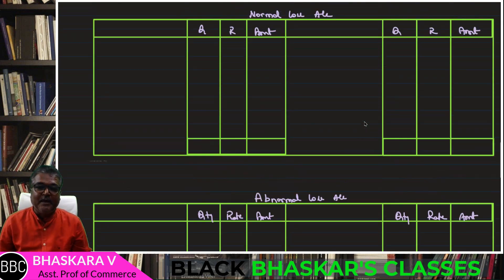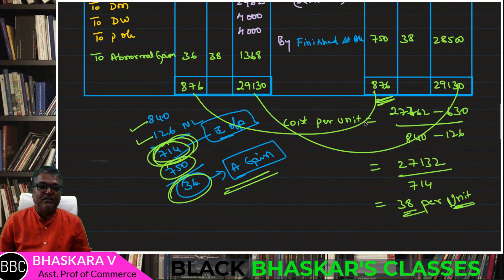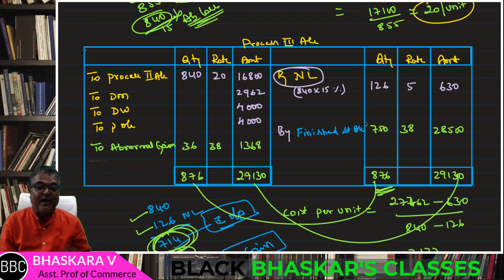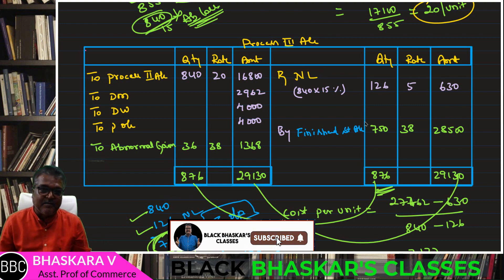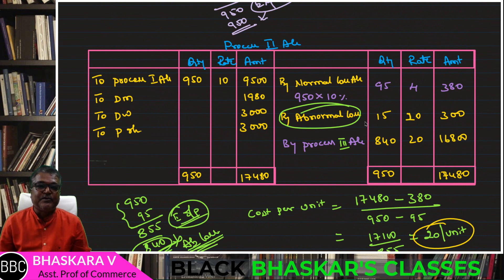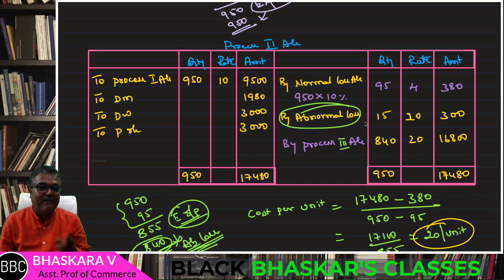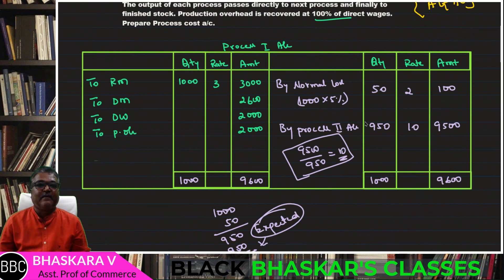You need to go through the ledger account with cross-posting. Process 3 Account — Normal Loss Account on the credit side. Process 2 Account — Normal Loss Account on the credit side. Process 1 Account — Normal Loss Account on the credit side. These are the debit-side entries by the respective process accounts.